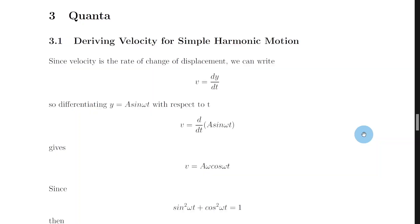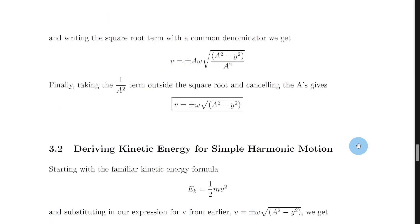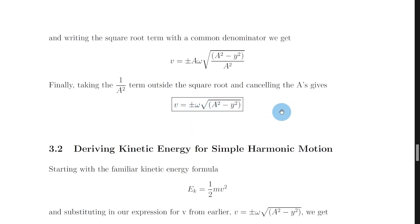Although given on the relationship sheet in the exam, you could be expected to derive an expression for the velocity of an object undergoing simple harmonic motion. That expression looks like this: v equals plus or minus omega root a squared minus y squared. So we're going to show how to get there.